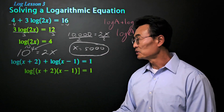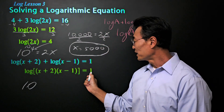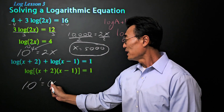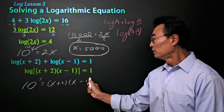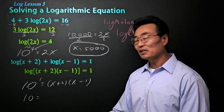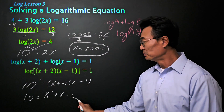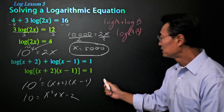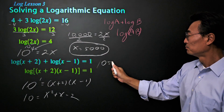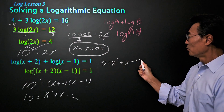Once again, we're going to change this into an exponential equation where the base will be 10 — because since there's nothing written there — we're going to take the one, put it in the exponent position, and then set it equal to x plus two times x minus one. Continuing with the simplification, we multiply this out and get x squared plus x minus two. Taking the 10, we subtract from the left on the right, giving us zero equals x squared plus x minus 12.